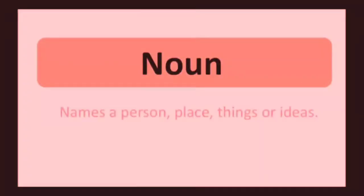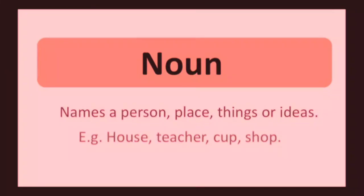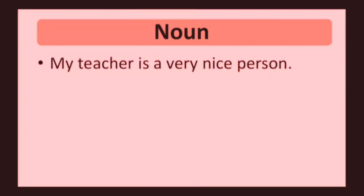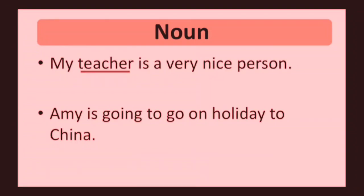Noun. Noun names a person, place, things or ideas. Examples: house, teacher, cup, shop. My teacher is a very nice person. Teacher is the noun in this sentence. Amy is going to go on holiday to China. There are two nouns in this sentence: Amy and China. Amy is the name of a person; China is the name of a country.